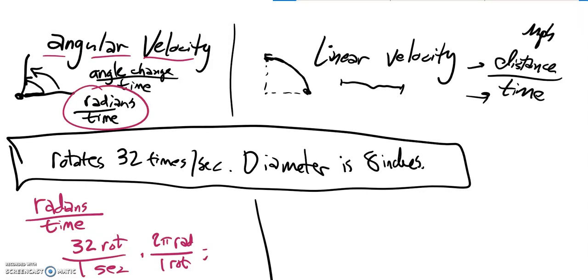One rotation is 2 pi radians, which is great. Rotations cancel out. That's a 1 on the bottom. 32 times 2 pi is 64 pi. And notice this is radians per second, angular velocity.